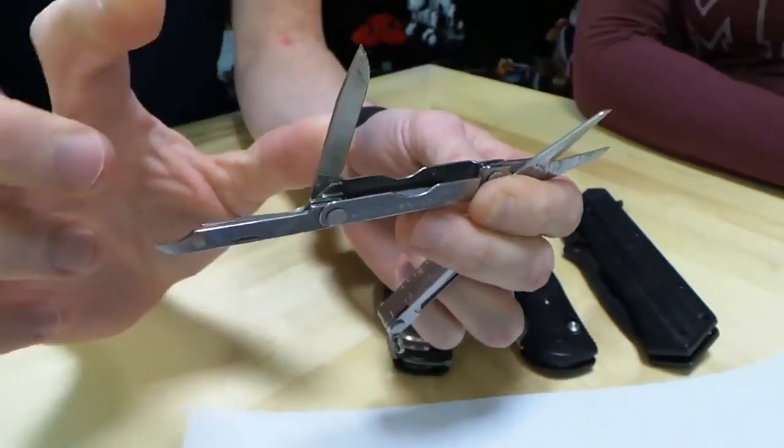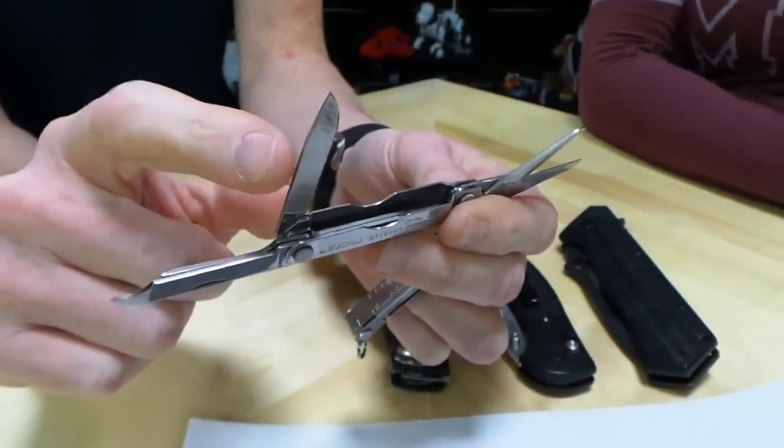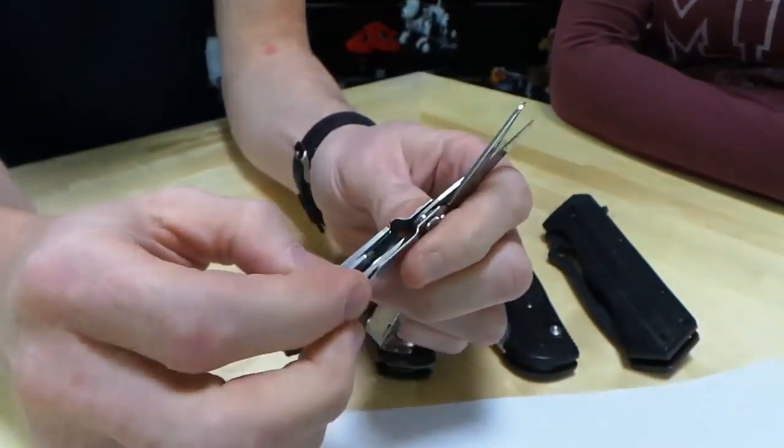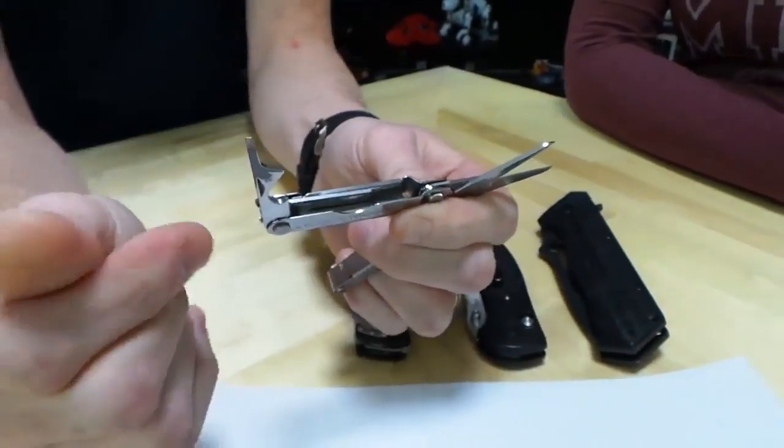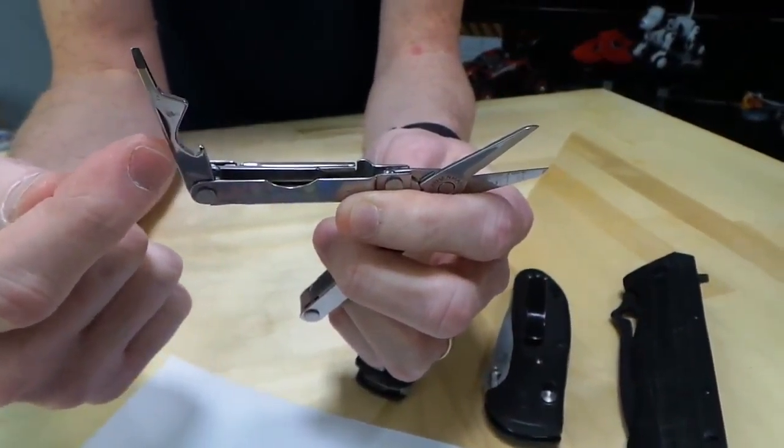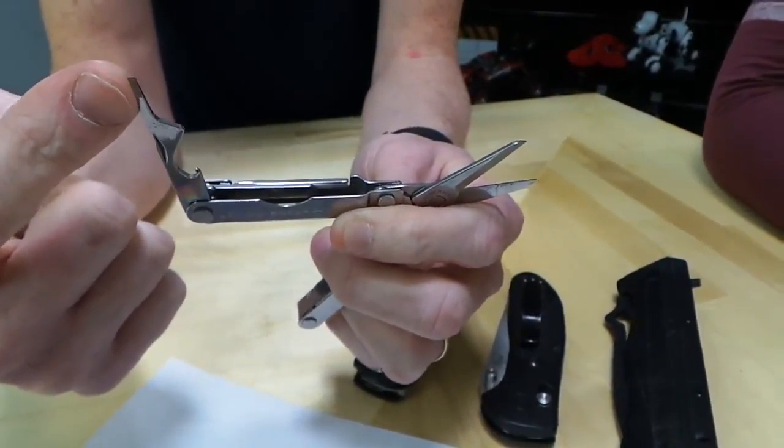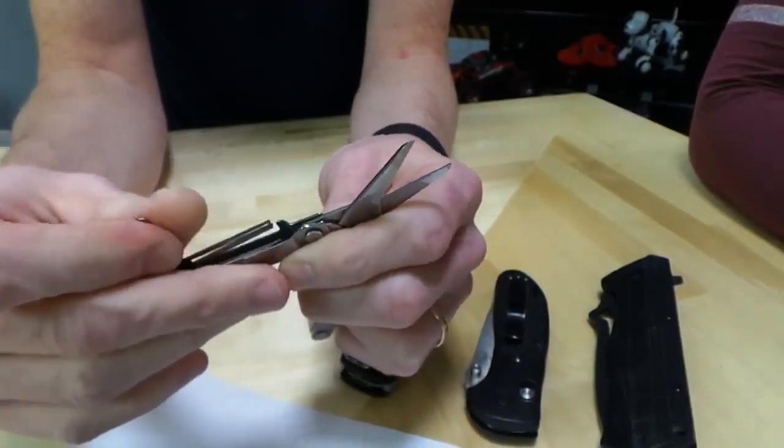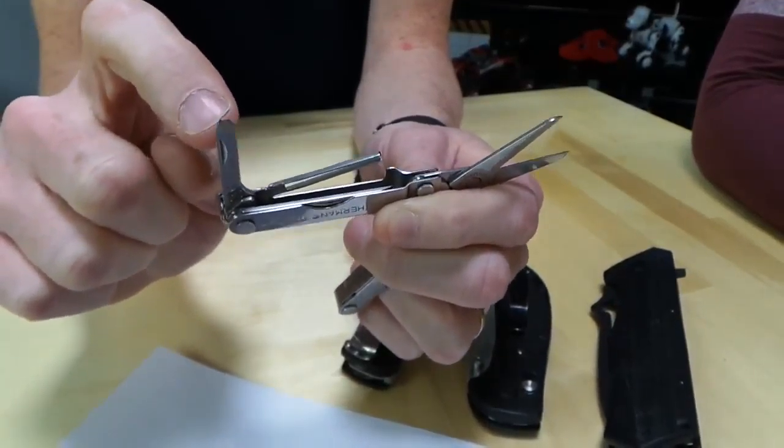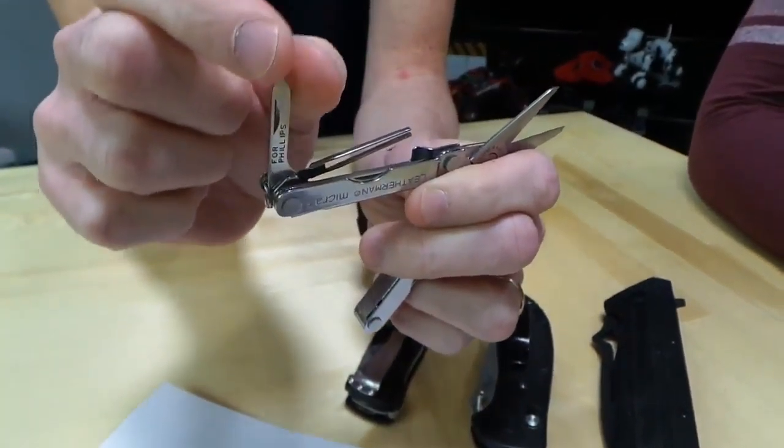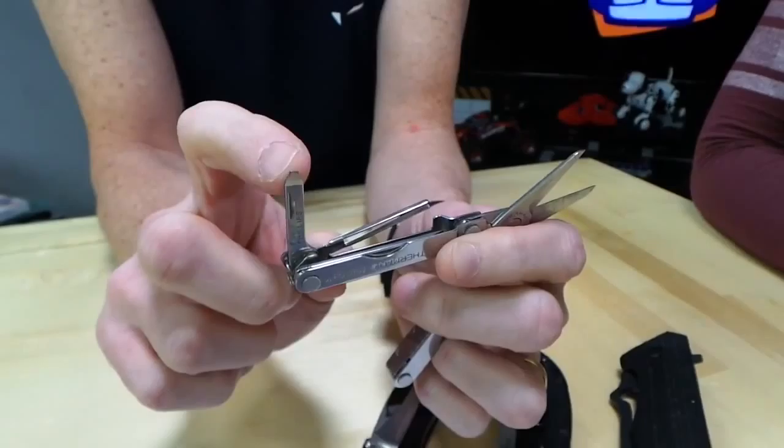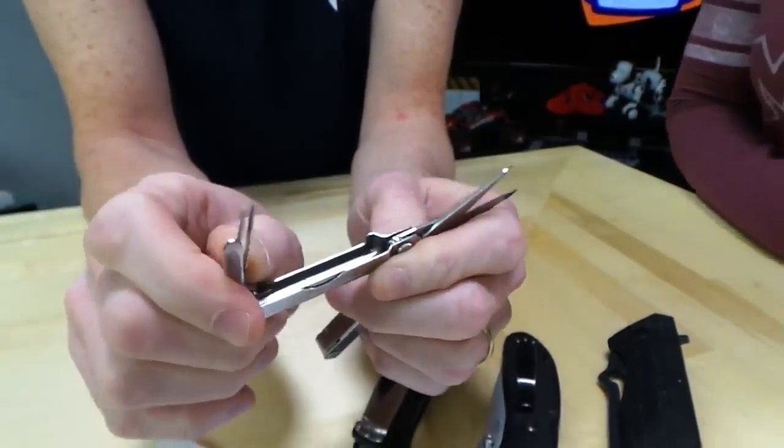But the good news is it's only a $20 investment. So what is it? It's got scissors, and these scissors are actually quite sharp and they work well. It has a little file thing for like girls or I don't know who uses that. But I use this to poke stuff sometimes. You could use that to dig out your splinter. It also has a flat screwdriver here and it has a knife.